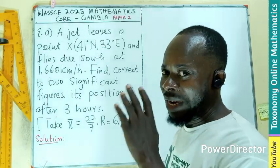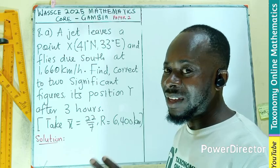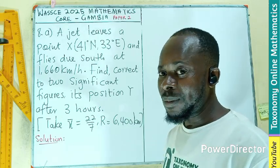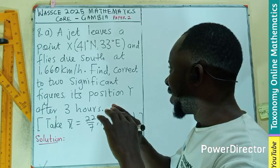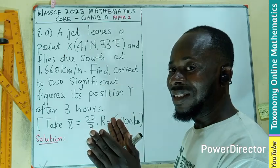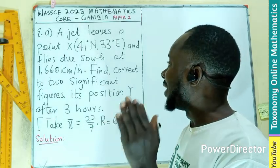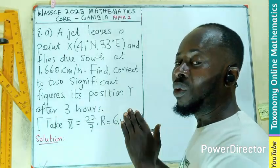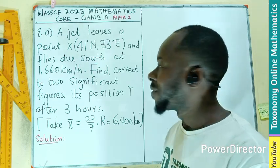So the 1,660 given to us is actually the speed. We don't know the distance that the jet flies from X to Y, but we can find that.